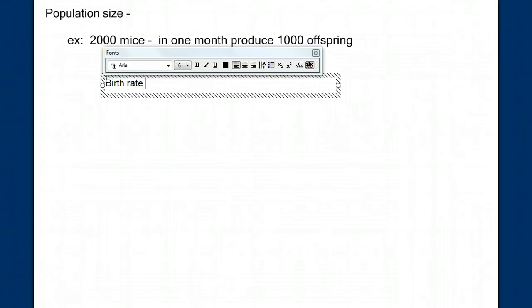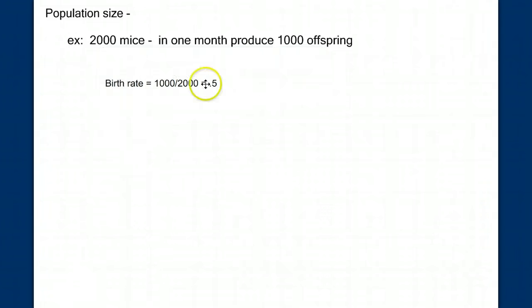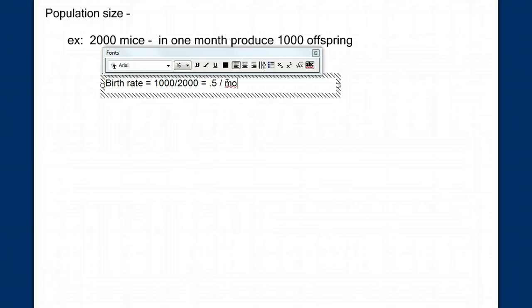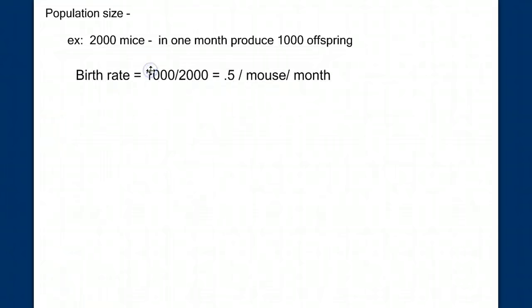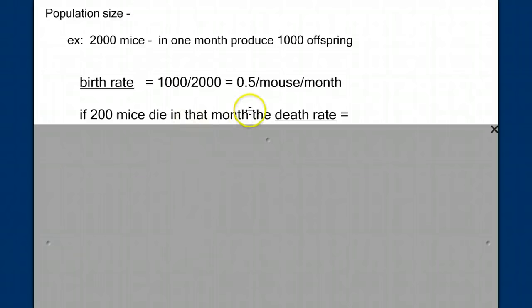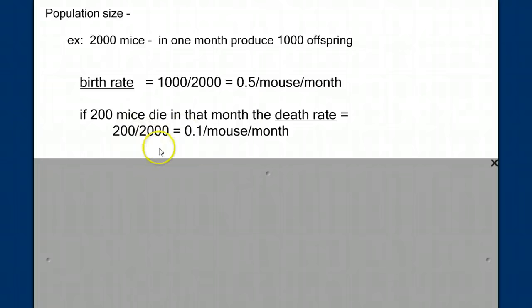Let's work through an example. If we had a population of 2,000 mice, and in one month they produce 1,000 offspring, what would be the birth rate for this population? Well, the birth rate would equal the 1,000 produced divided by the 2,000 of the base population would equal 0.5, that's in units of per mouse per month. If, during that same period, 200 mice die, what would be the death rate for this population? Stop the video and calculate it. If 200 mice die in that month, then the death rate would equal the 200 divided by the base population of 2,000, which equals 0.1 per mouse per month.